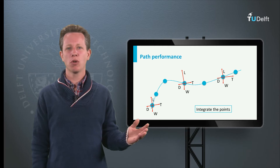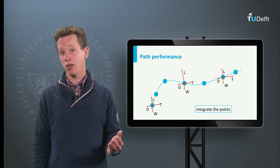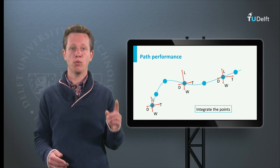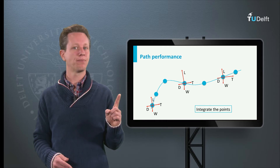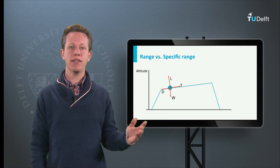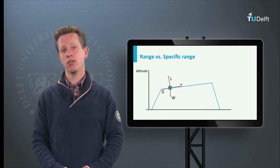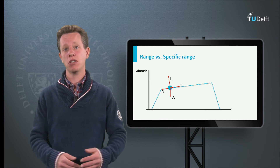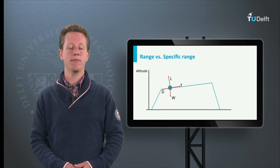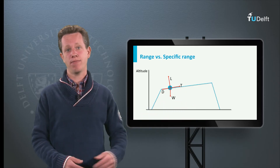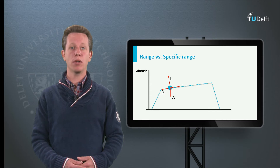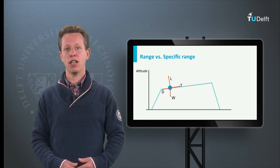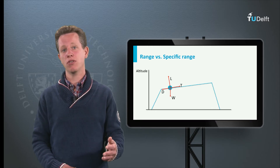There are more path performance problems. For example, you are able now to calculate specific range, which is the distance an aircraft can fly per unit of fuel at one particular moment in time. However, in real flight, aircraft weight reduces during flight due to the fact that fuel is burned. This can be quite significant, since about 50% of the maximum takeoff weight can be fuel weight. So at the end of a cruise flight, the aircraft may have lost half its weight compared to the start of the cruise flight. As a result, the performance at the end of the cruise is different and the optimal path from start to end needs to be found.